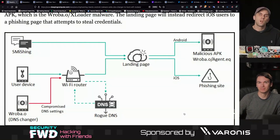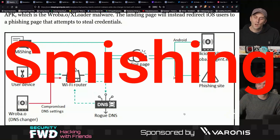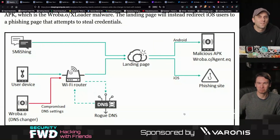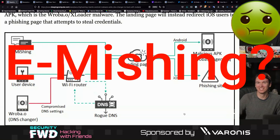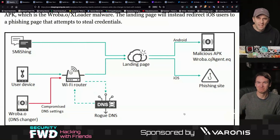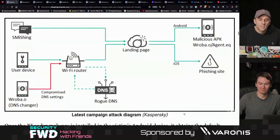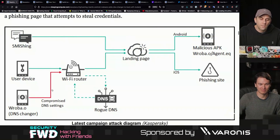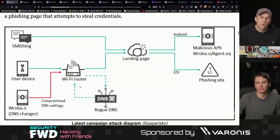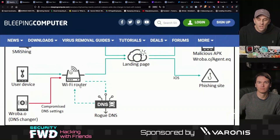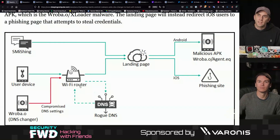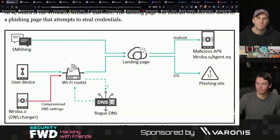On a technical level, the initial infection vector is what the article calls 'smishing' — essentially phishing via SMS. If you open the malicious SMS link, it will analyze your device and determine whether it wants to try to steal your credentials or attack your Wi-Fi router. If it targets the router, it will persistently attempt to infect it by changing the DNS settings. This is really interesting because the campaign doesn't rely on the Android device to propagate — it relies on infecting routers, which is a clever way to make a mobile campaign target network infrastructure instead.